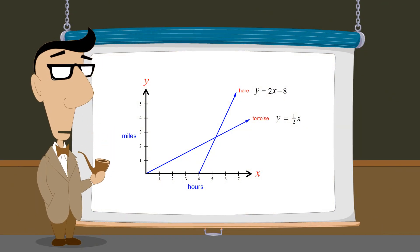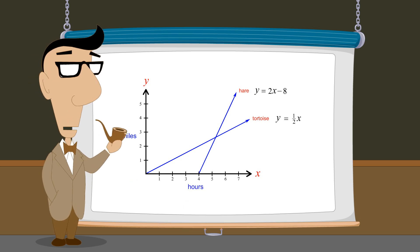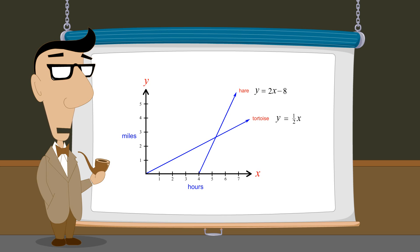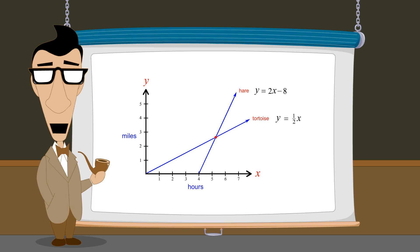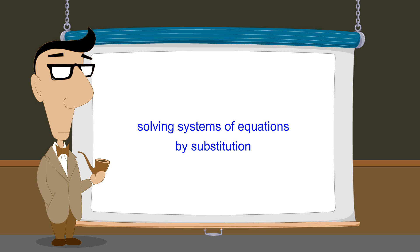We now have equations for the tortoise's and hare's distances as functions of time. It is important to remember that although the lines described by these equations extend infinitely in both directions, only the portion of the lines whose coordinates are positive are meaningful in this particular example. In the next lecture, we will introduce a technique called substitution, which will allow us to calculate the unique coordinates which simultaneously solve both equations and thus find the intersection point of the two graphs.